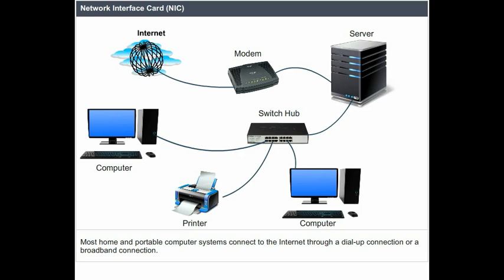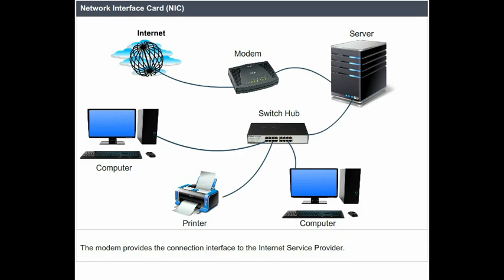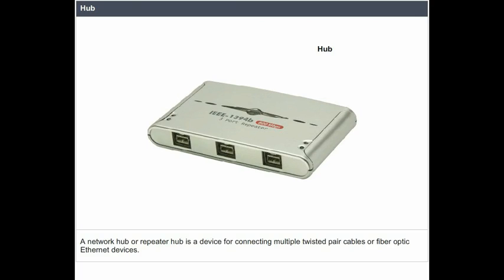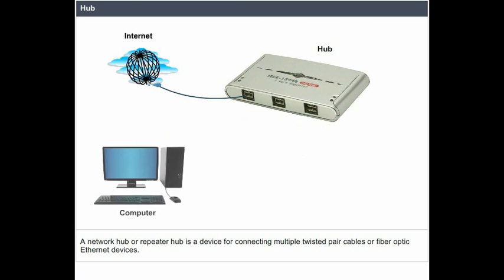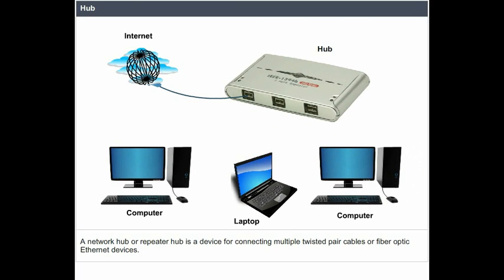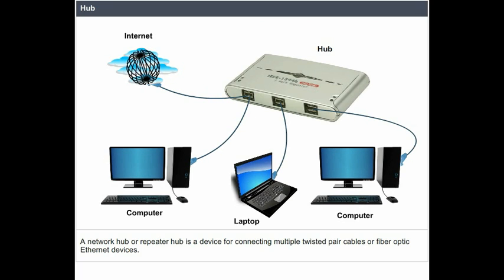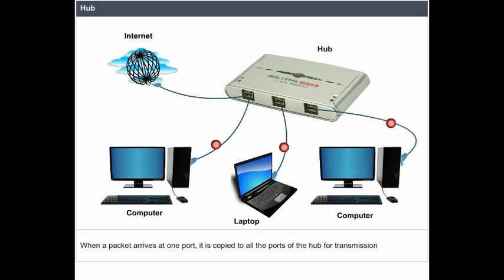Most home and portable computer systems connect to the internet through a dial-up connection or a broadband connection. The modem provides the connection interface to the internet service provider. A network hub or repeater hub is a device for connecting multiple twisted pair cables or fiber optic Ethernet devices. When a packet arrives at one port, it is copied to all the ports of the hub for transmission.